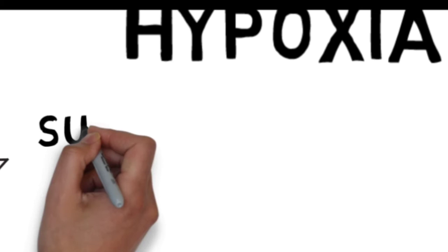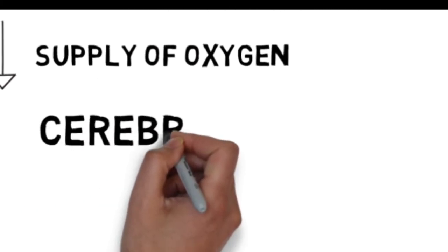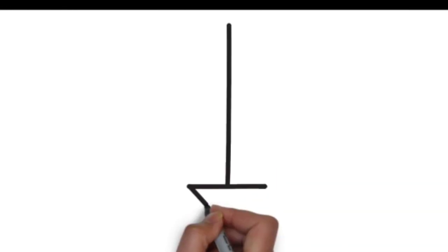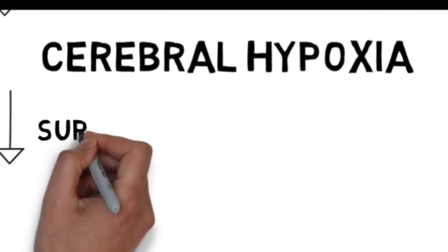Hypoxia is the reduced supply of oxygen, while Cerebral Hypoxia can be referred to as reduced supply of oxygen to the brain.